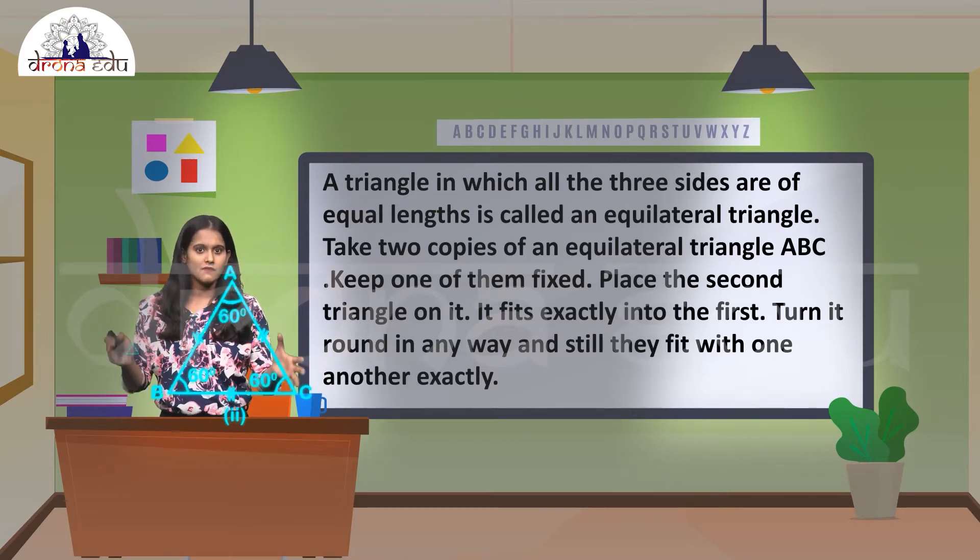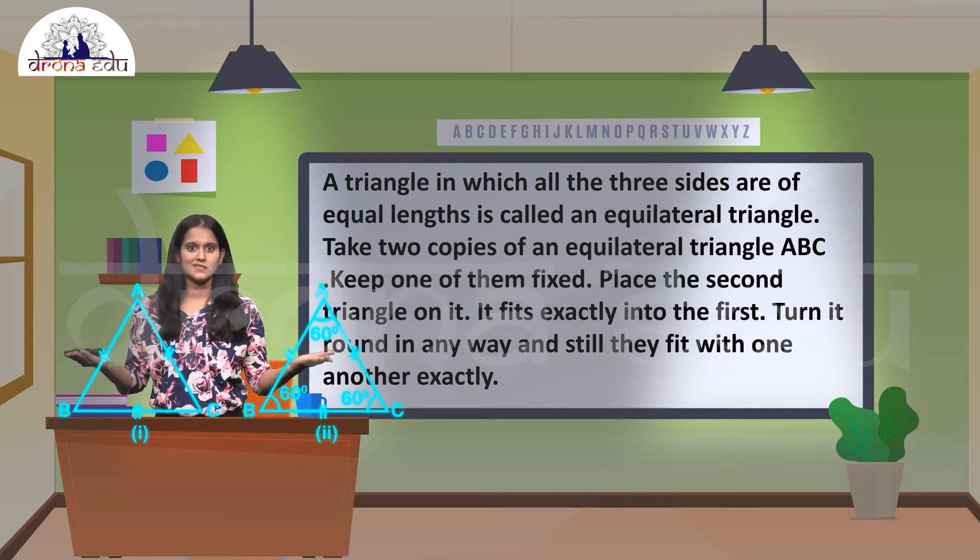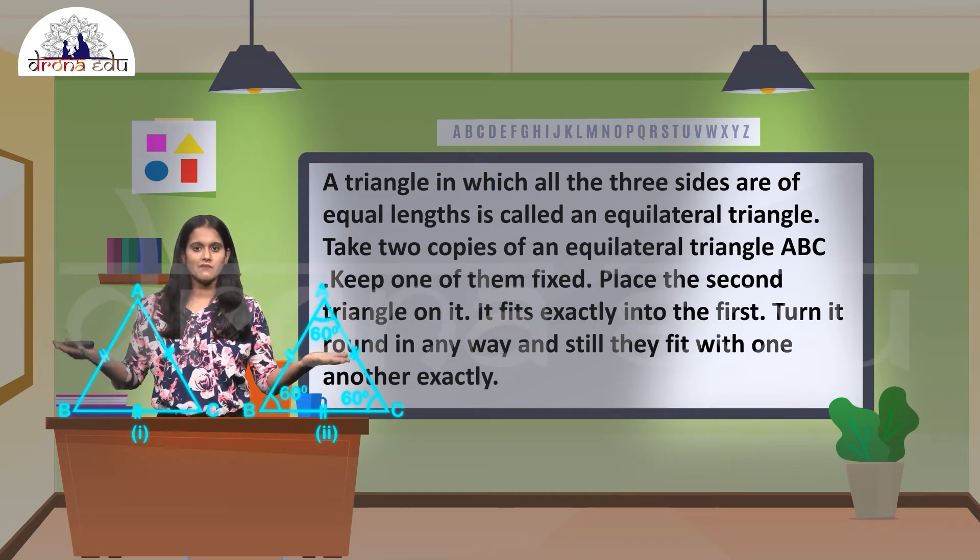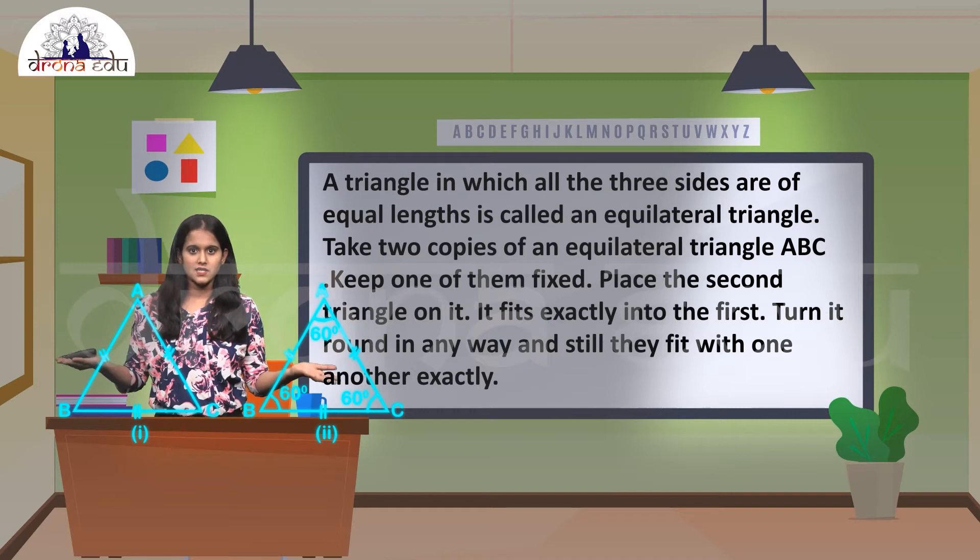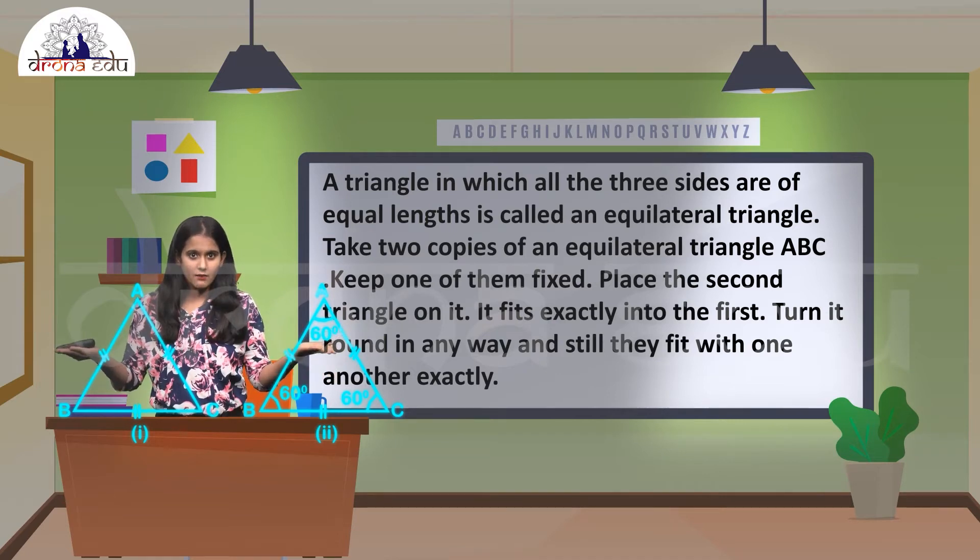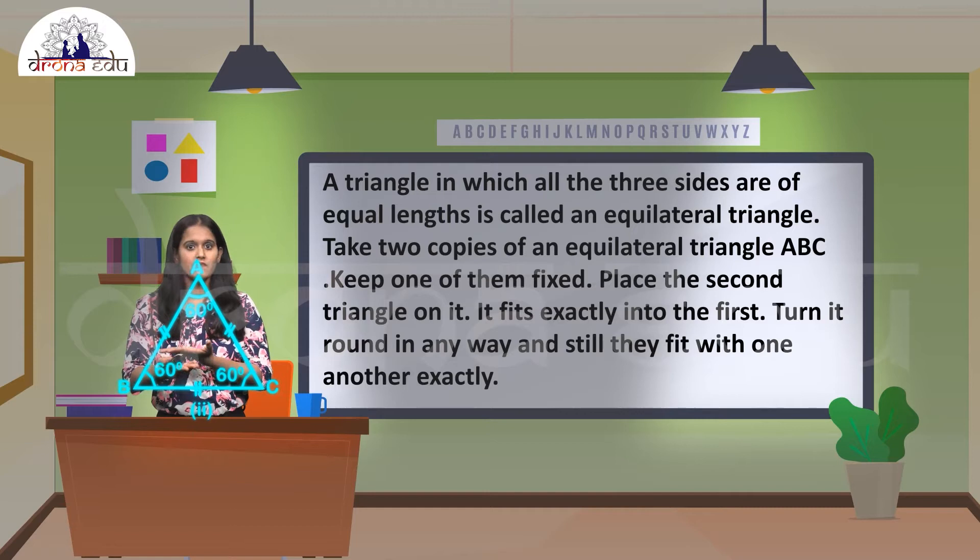Now instead of one, if I take two exact copies like this, two copies of equilateral triangle ABC. When I keep one and place the other, one of them is fixed and the other triangle is placed on it.